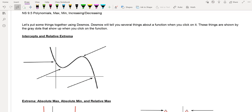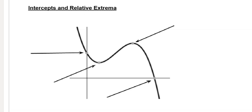When we go ahead and put a function into Desmos, it's super cool because when you click on a function, it is going to light up and there are going to be gray dots that show up all over the place. Sometimes those gray dots are going to be really easy to understand. This one and this one are going to be our intercepts — the one on the vertical line is the y-intercept, and the one on the horizontal line is the x-intercept.